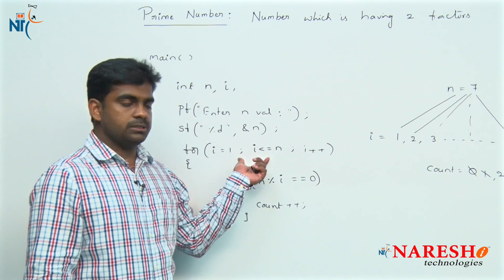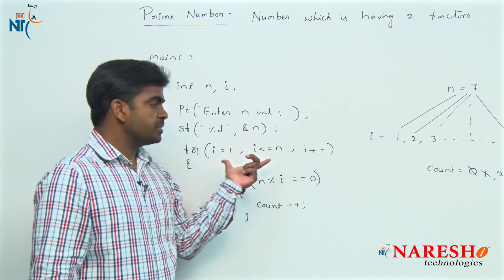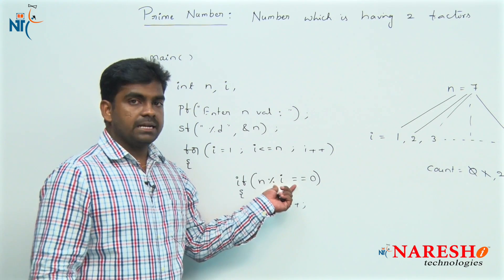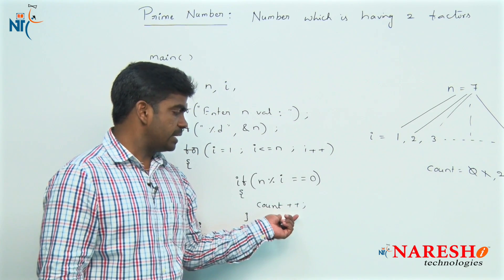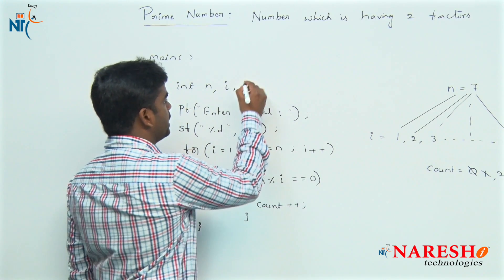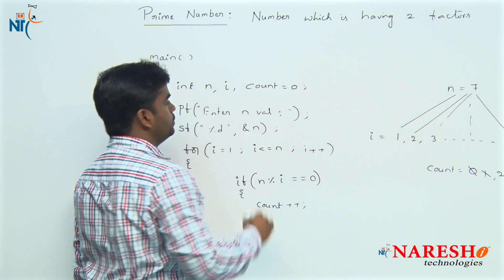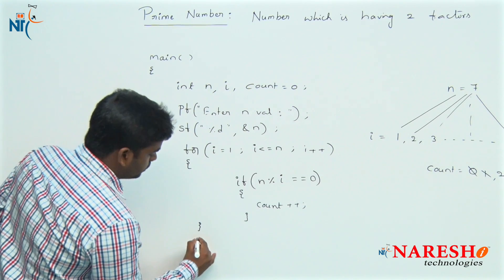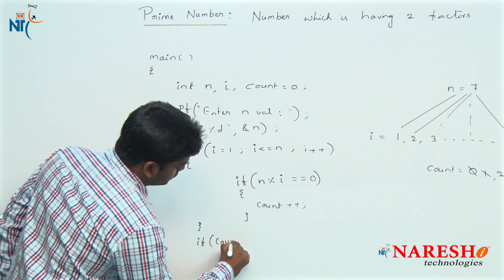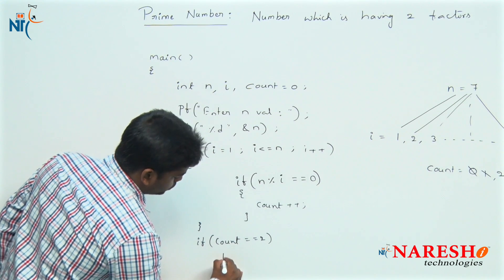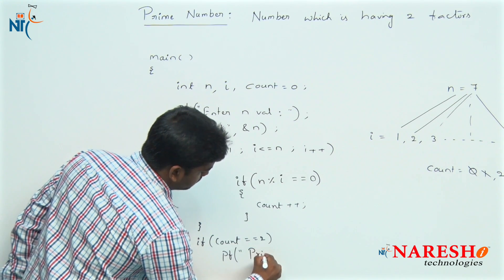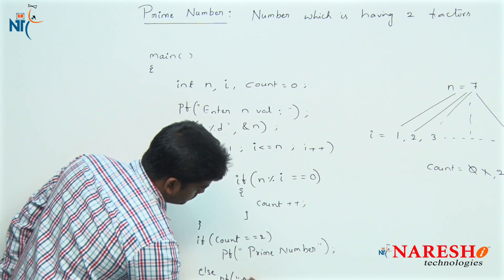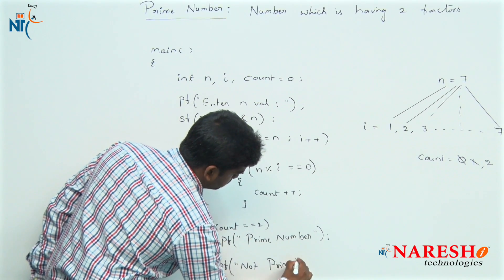This for loop executes depending on the N value. Suppose N value is 7, 7 times it will repeat and 7 times it will check the condition. How many times the condition satisfies, those many times the count value increases. Initial value of count is 0. Next, if the count value equals to 2, we can print it is a prime number, else not a prime number. This is the program on how to check whether the number is a prime number or not using C language syntax.